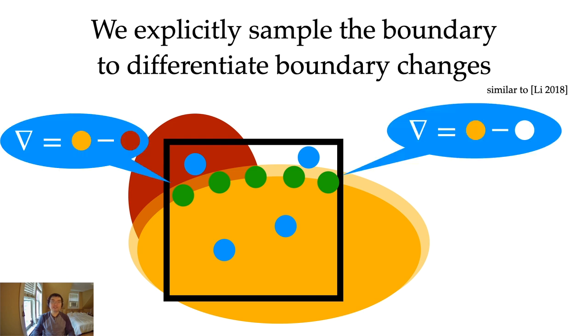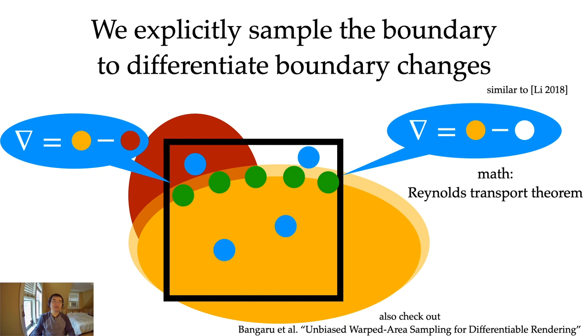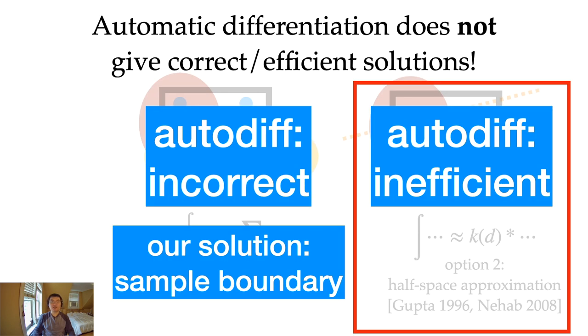If we ask one of these boundary samples what is the derivatives, they will be able to say that after the deformation, there'll be more yellow and less white or red. So we can compute the derivatives. The math of the derivative can be derived from the Reynolds transport theorem. We have another presentation at SIGGRAPH Asia related to this. Check out Sai Bansala's talk about unbiased warp area sampling for differentiable rendering. It's also similar to our previous 3D differentiable rendering work, but we handle polynomial curves instead of triangle meshes. So we resolve the incorrect automatic differentiation of Monte Carlo sampling by sampling boundaries.